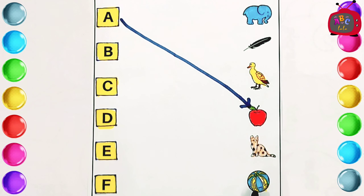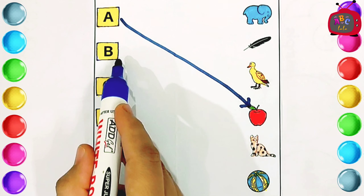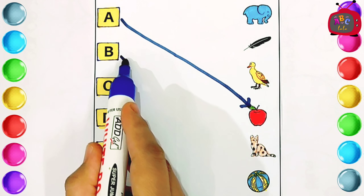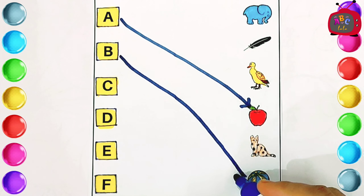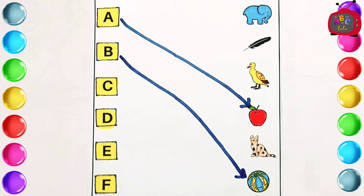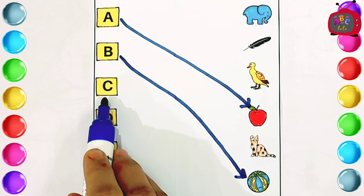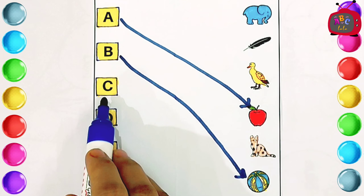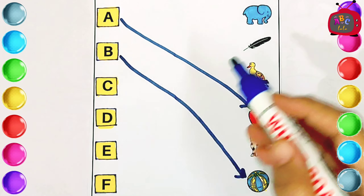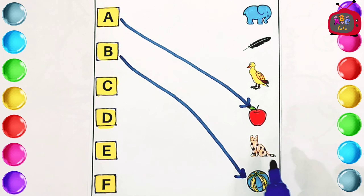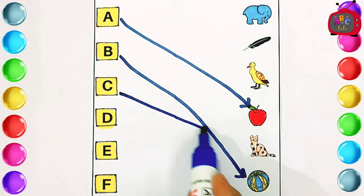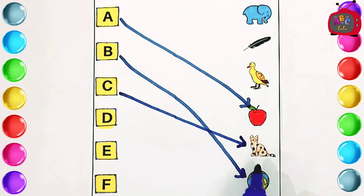Ball. Ball. C. C is for Cat. C is for Cat.